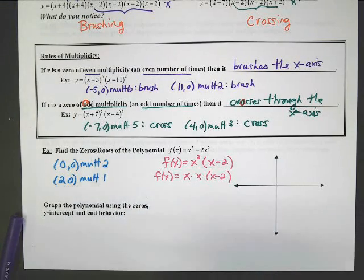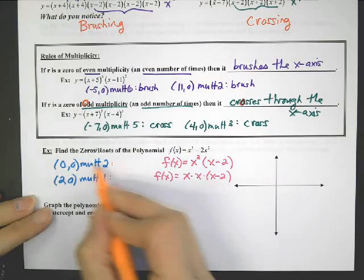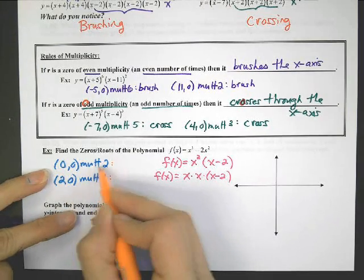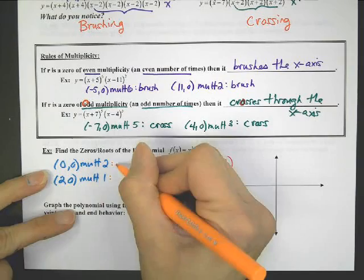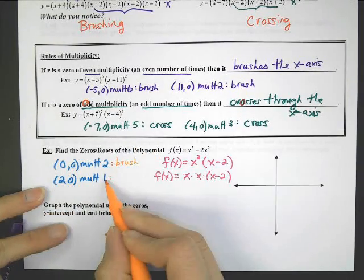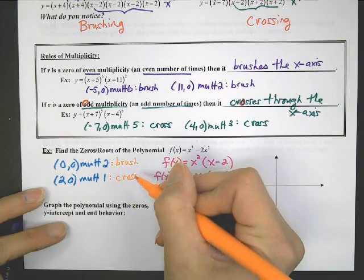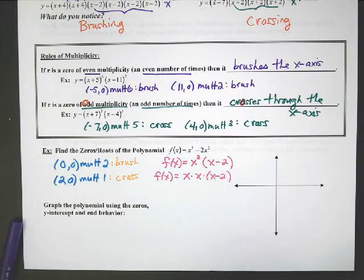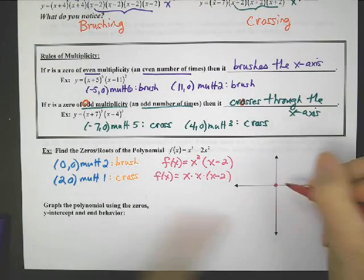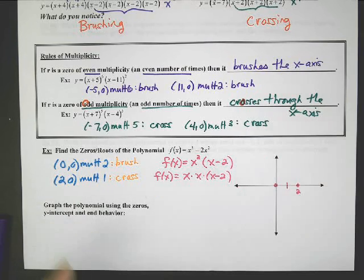Then I have the next x-intercept at 2, 0, but it appears there one time — so its multiplicity is just once. And I have to say afterwards: if it's an even number of multiplicity, it's going to brush; and an odd number of times, it's going to cross. So on this graph, I know it's going to touch 0, 0 and 2, 0 — those are the x-intercepts.